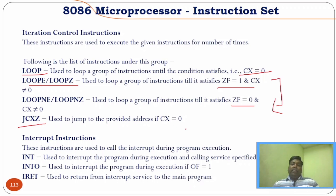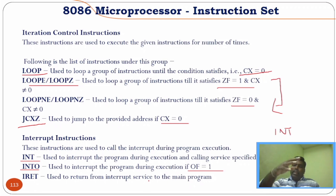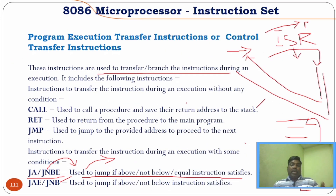JCXZ performs a jump if the CX register equals zero. For interrupt instructions: INT — when enabled, it calls an interrupt subroutine to serve the interrupt. INTO interrupts the program during execution if the overflow flag equals one. IRET — Interrupt Return — returns from the interrupt subroutine back to the main instruction after serving the interrupt.